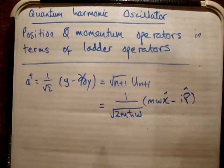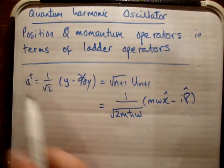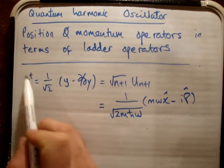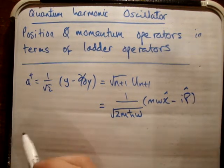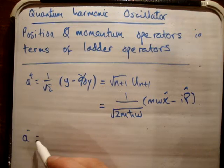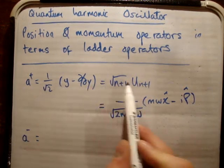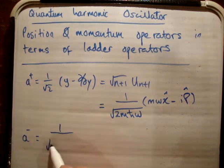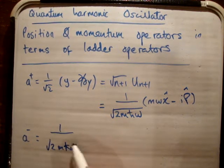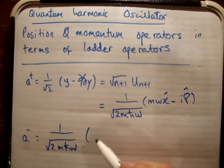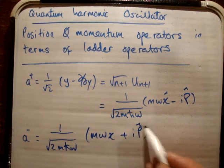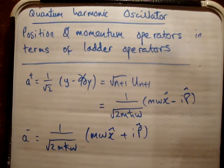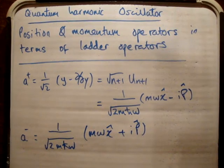I notice here that the creation operator A plus is in terms of your position operator and your momentum operator. Similarly, your annihilation operator A minus can be written as 1 over root 2MℏΩ times M omega X plus i times P hat. These are the two forms that I'm going to use.